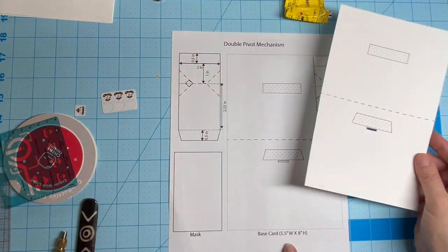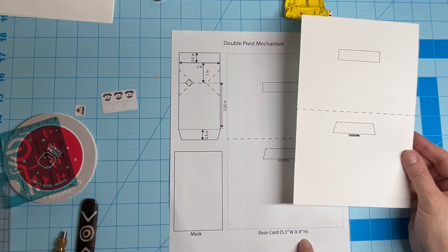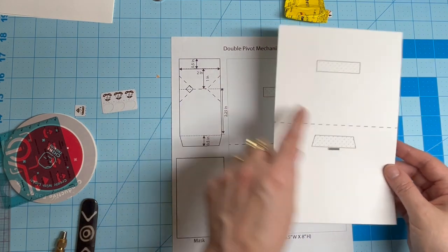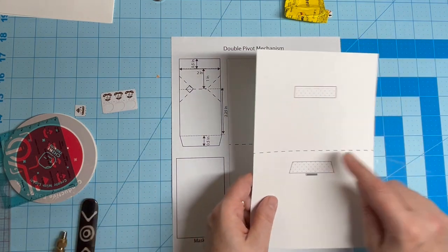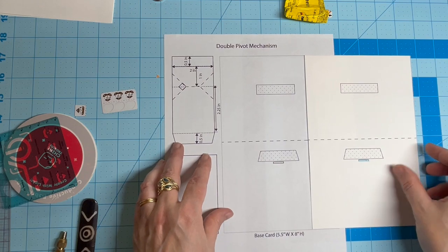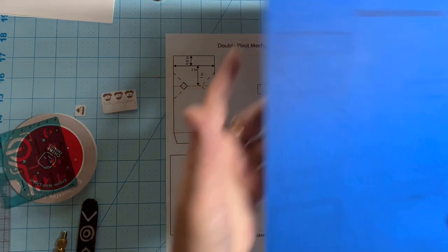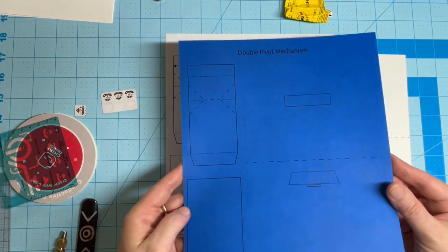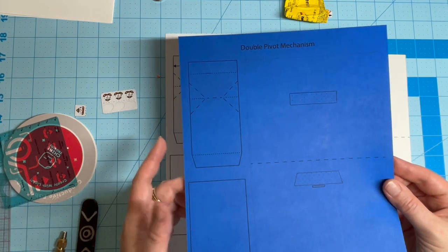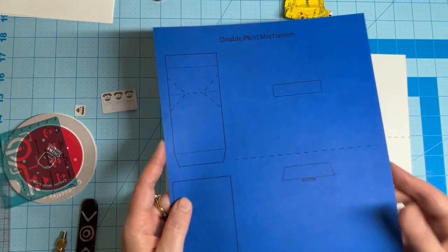The base card is five and a half inches wide and eight inches high. It's scored down the center and has a small slot cut out about an inch from the crease. For demo purposes, I'll be using white cardstock, but as a minimum, in creating your own designs, I suggest you use the same color of cardstock for the Double Pivot Mechanism as the base card.